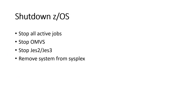In this slide we understand the shutdown process of z/OS. There are three types of steps to shut down z/OS. First, stop all active jobs. Second, stop OMVS. Third, stop JES2 or JES3, and finally remove the system from the sysplex.